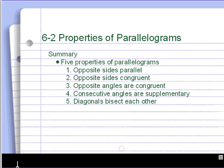So in summary, what you want to get from this lesson is the five properties of parallelograms. First, the opposite sides are parallel. Opposite sides are congruent. Opposite angles are congruent. Consecutive angles are supplementary. And the diagonals bisect each other. So good luck and bring any questions to class.